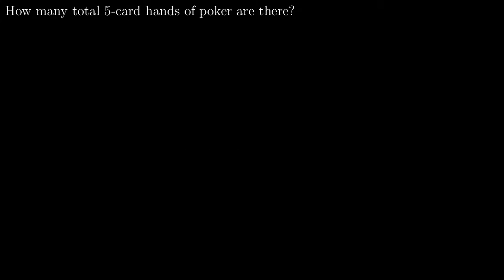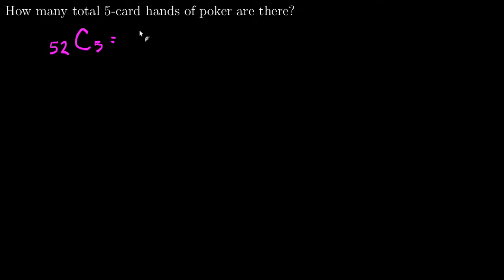So let's dive right in, and we'll start off with just how many five-card hands of poker are there. That's actually a pretty easy calculation. There are 52 cards in a standard deck, and I just need to choose five of them. The order you get your cards doesn't matter in a five-card hand, so it's 52 choose 5. I've already calculated this, and there are 2,598,960 possible hands of poker.